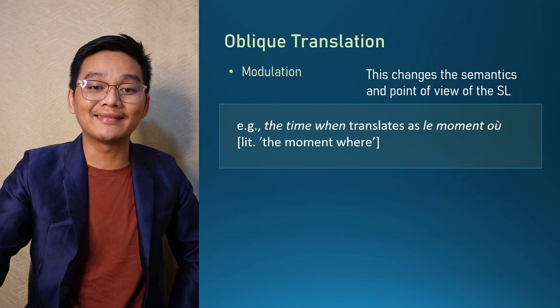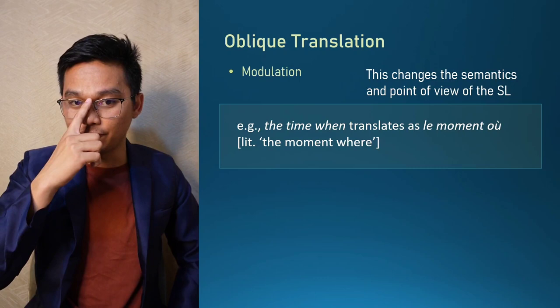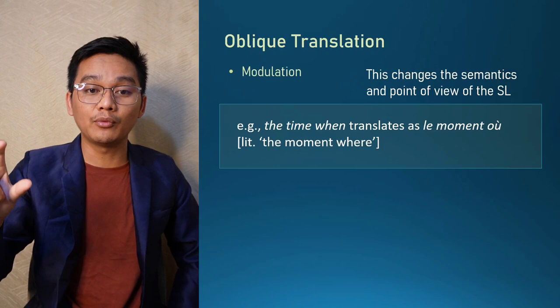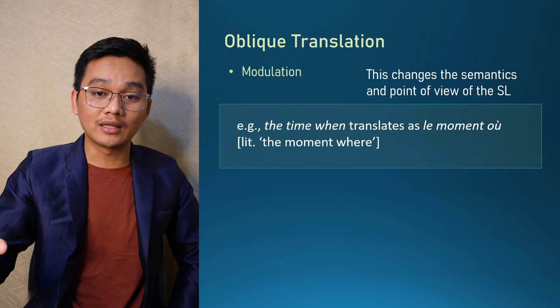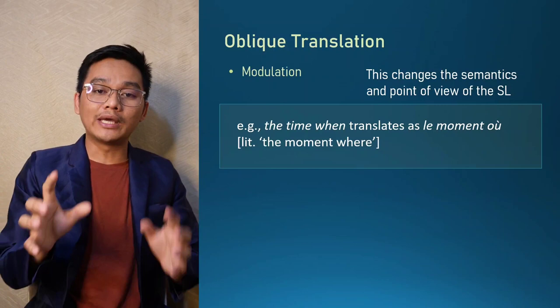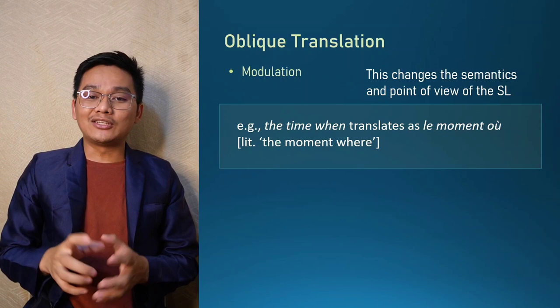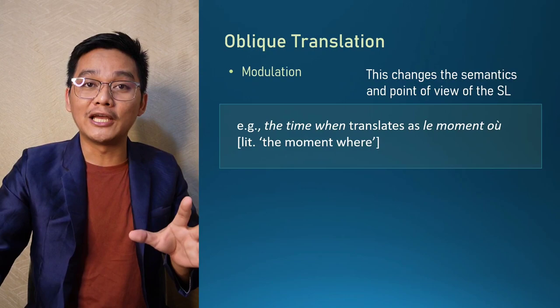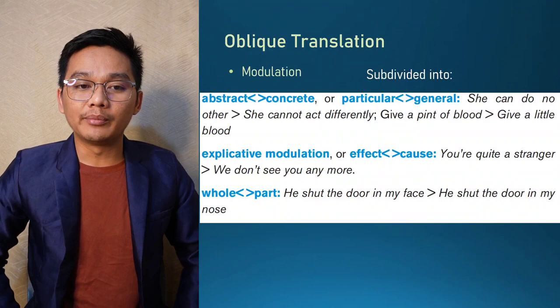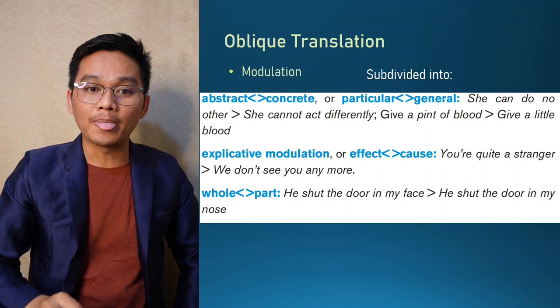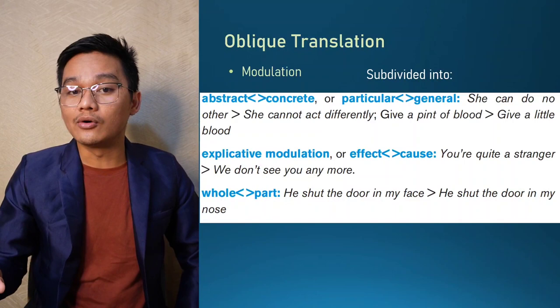Modulation changes the semantics and point of view of the source language. For example, the phrase 'the time when' is translated into French as 'le moment où,' which in literal sense means 'the moment where.' The semantics and point of view are slightly tweaked — that is modulation. According to Vinay and Darbelnet, modulation is subdivided into several subcategories.